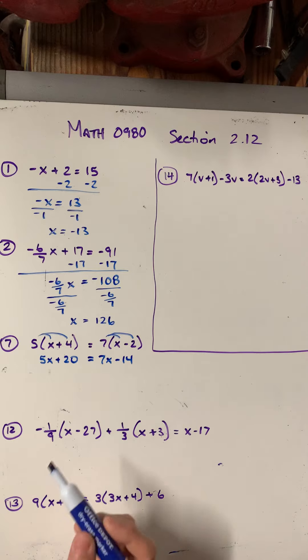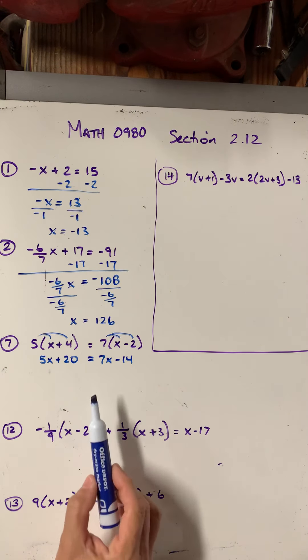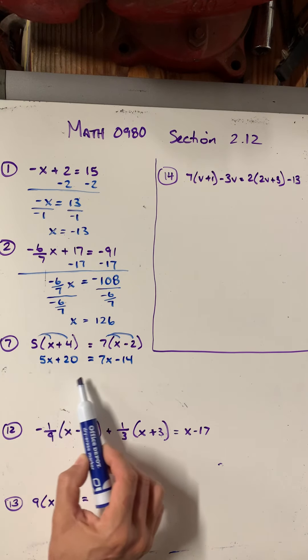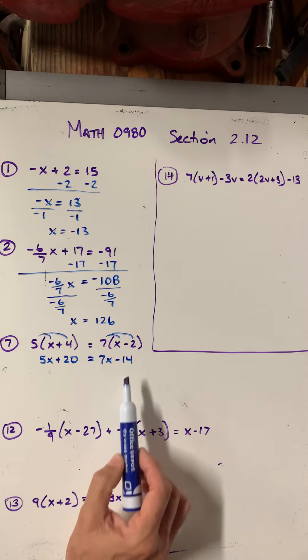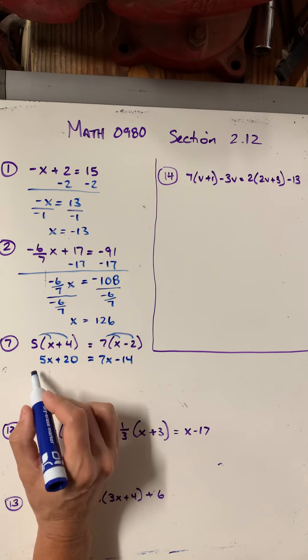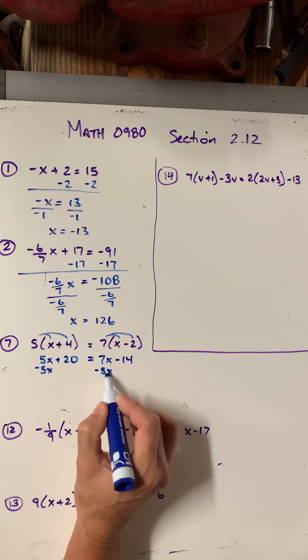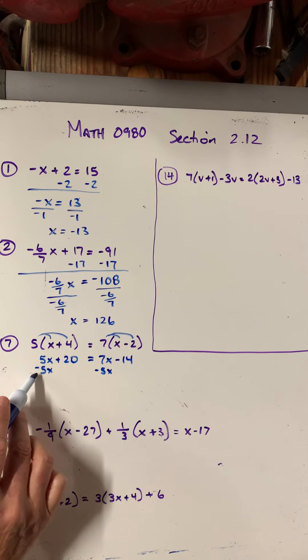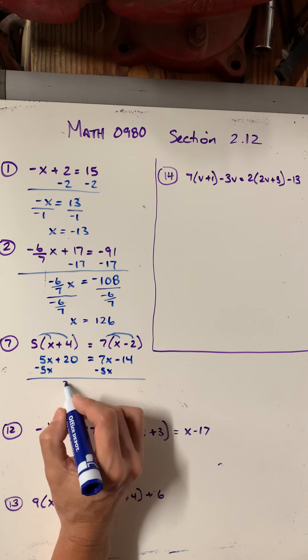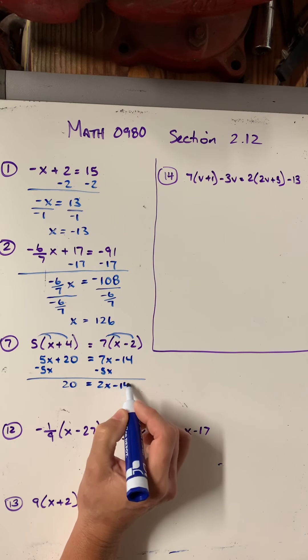So my goal before I can do what I did in questions 1 and 2 is to get anything that has the variable x on one side and anything that has the constant term on the other side. So I think I'll move my 5x by subtracting it because it was positive. And then on this side, I'll combine it with the 7x. So I'm going to get 20 equals 2x minus 14.